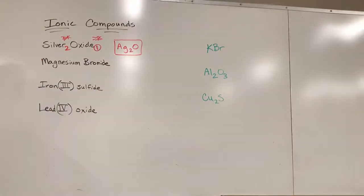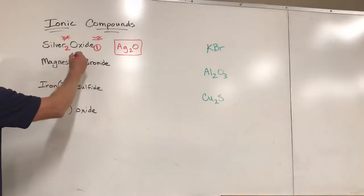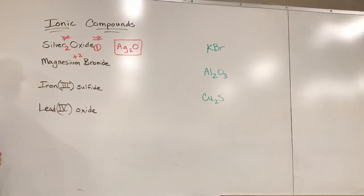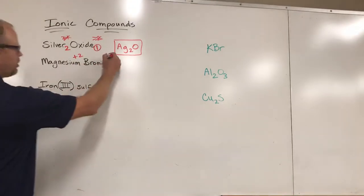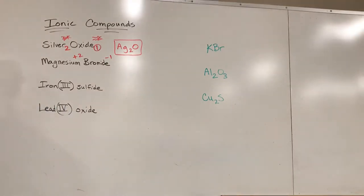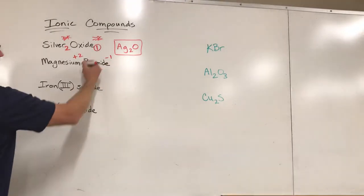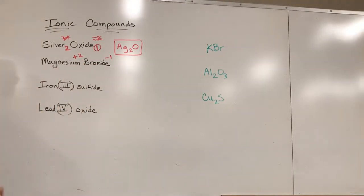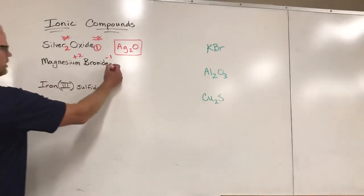If we take a look at magnesium bromide, let's take the same approach. Magnesium, if we look it up, has a positive two charge when it becomes an ion - means it loses two electrons. The bromide has a negative one. This time we're going to need more bromide ions to balance out one magnesium ion, so we're going to need twice as many bromides.